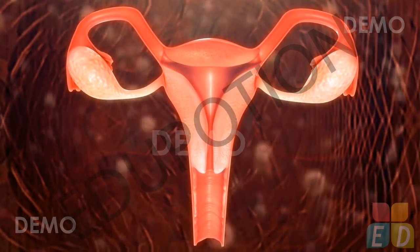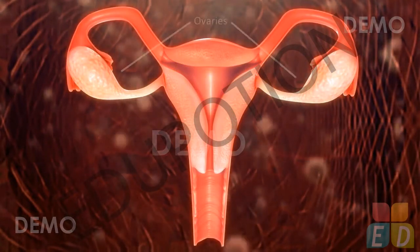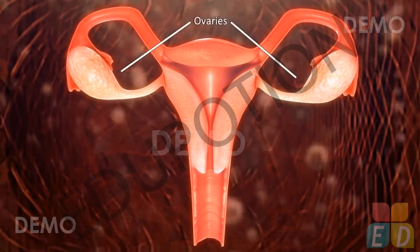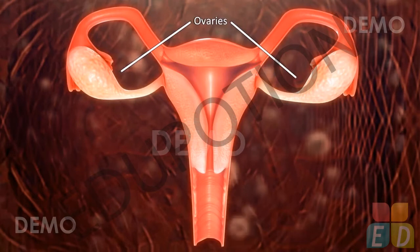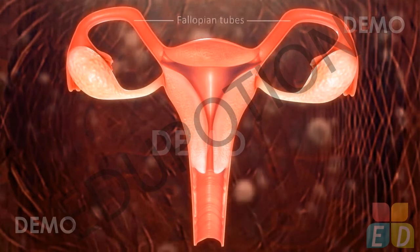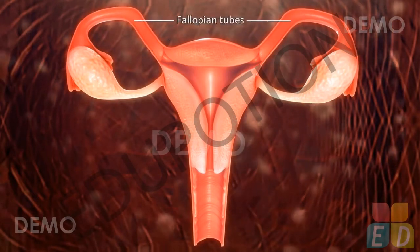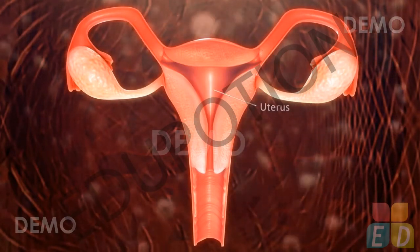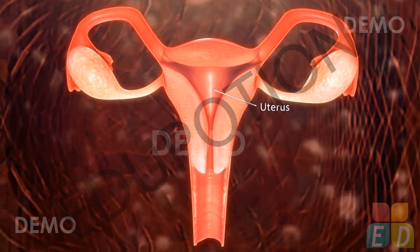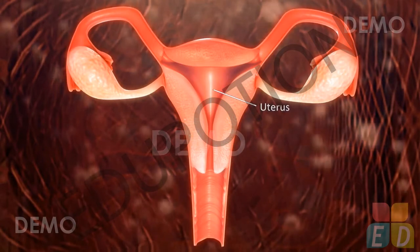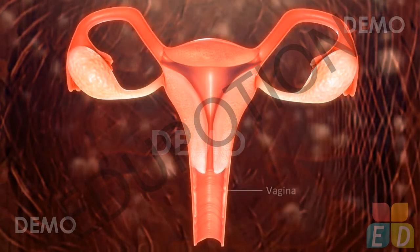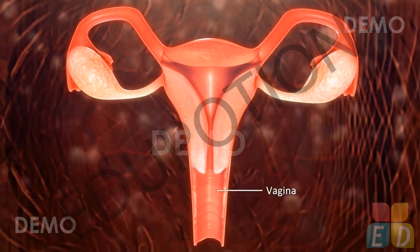The female reproductive system comprises of a pair of ovaries, a pair of fallopian tubes, the uterus, and the vagina.